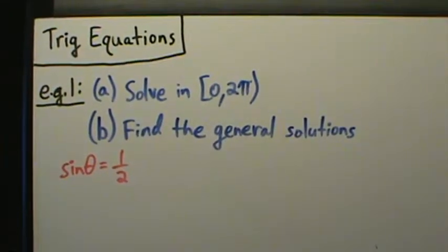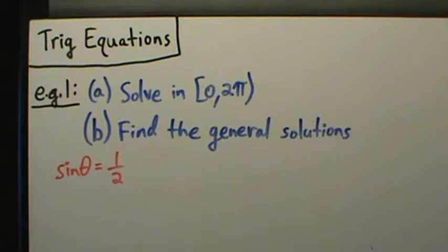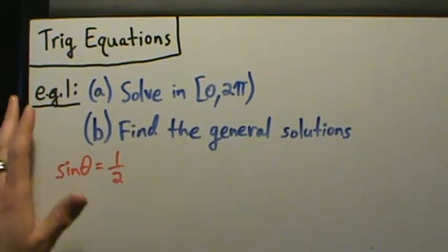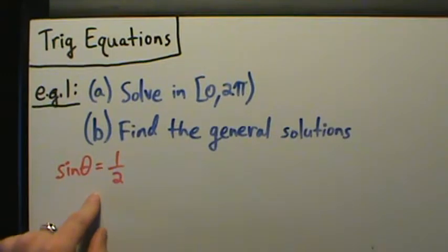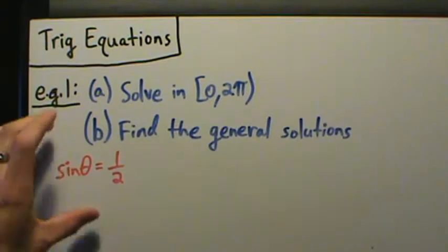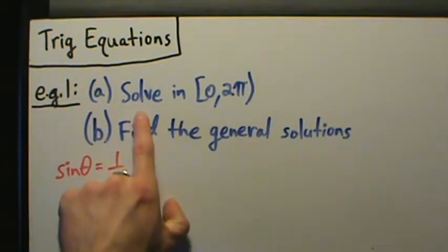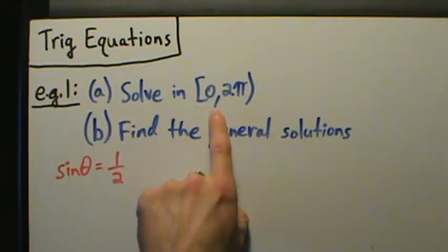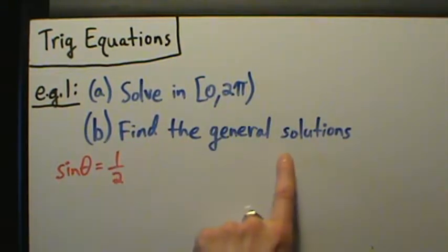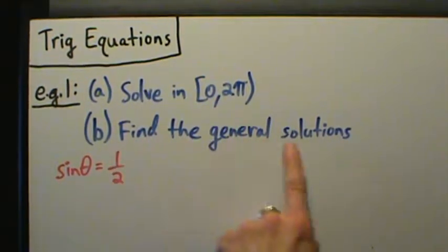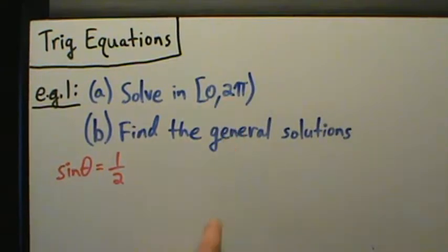In this video we're going to start talking about how to solve trigonometric equations. Here's example one. The equation is sine of theta equals one half — probably one of the most simple types of equations we can have. In part A we have to solve this equation in the interval 0 to 2π, and in part B find the general solutions. We'll talk about what part B means when we get there, but for now, solve in the interval 0 to 2π.